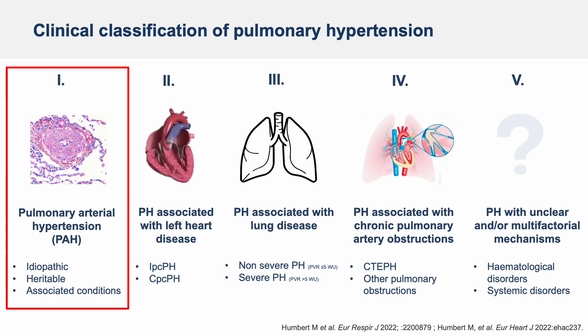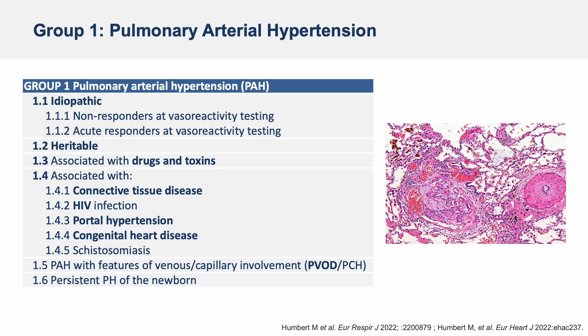Let's start with Group 1, which refers to pulmonary arterial hypertension, also called PAH. It is caused by pulmonary vascular remodeling: the arteries in the lungs become thicker and stiffer. Inside this group there are several types of pulmonary arterial hypertension: idiopathic PAH and heritable PAH.